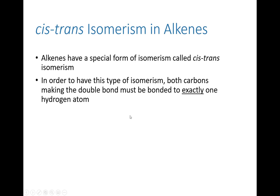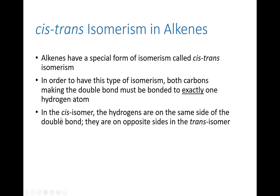Technically we could say this is true whenever there's exactly one of any group, so long as it's the same group — for example, exactly one methyl group on each atom. But in the very strictest sense, to use the words cis and trans, you have to have one hydrogen on both atoms, and so I'm going to limit myself to that definition. In a cis isomer, the hydrogens are on the same side of the double bond — they are on adjacent carbons but essentially pointing in the same direction.